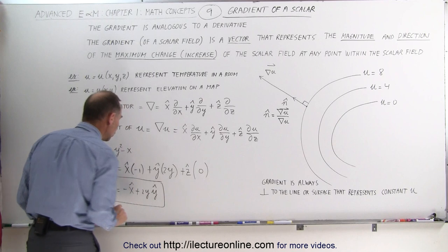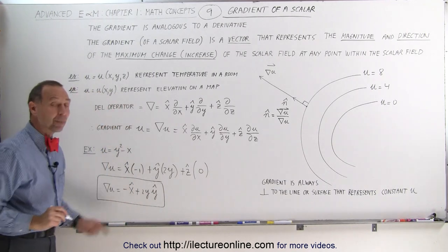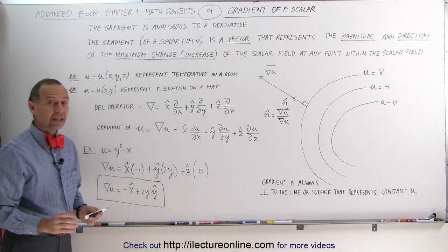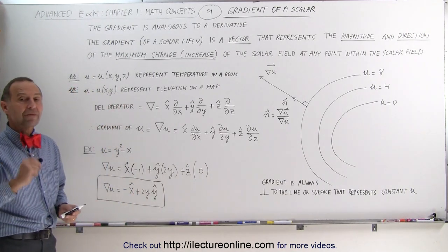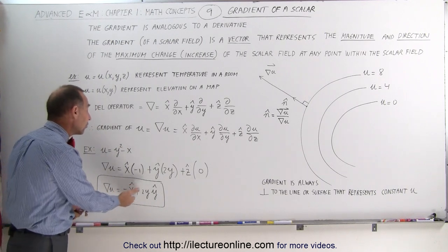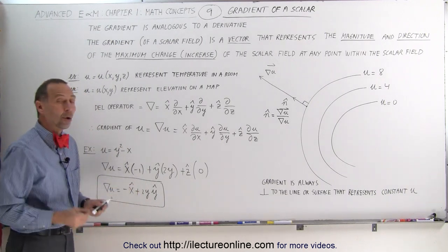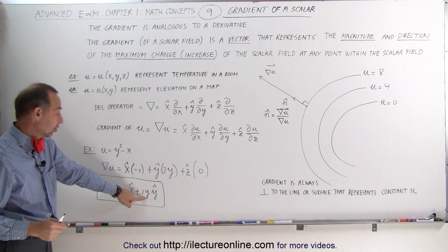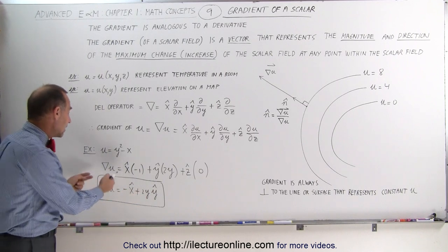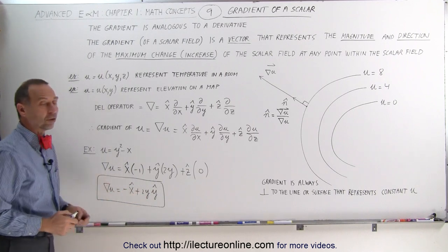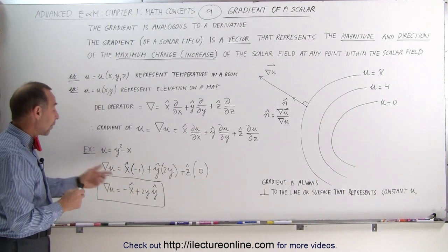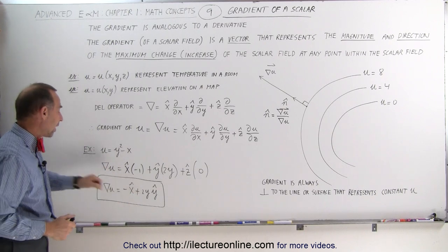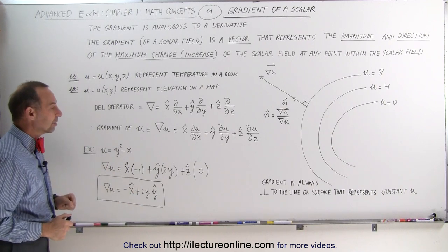So we can say that the gradient of u equals negative one in the x-direction plus 2y in the y-direction. And that's how we take the gradient. Notice we now end up with a vector that has a direction and a magnitude, which depends on the value of y. As y changes in this function, the gradient changes as well, so the direction and magnitude will change as a function of y.